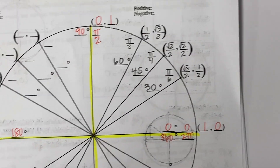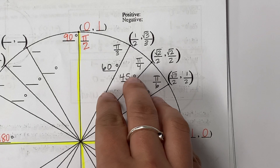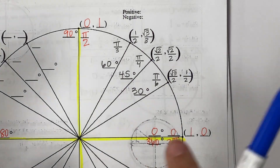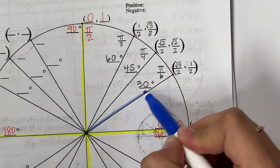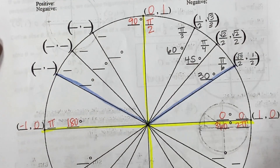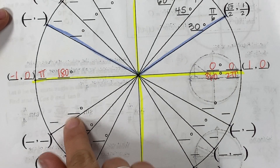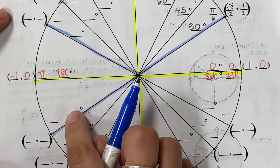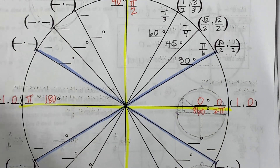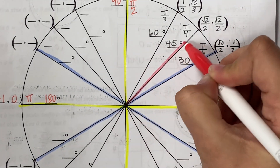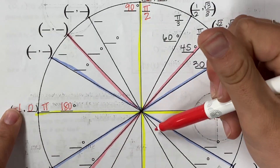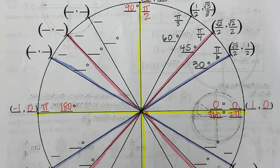Now, every quadrant from here uses a reference angle from quadrant 1. Remember, the reference angle is how far away the angle is from the x-axis. So if I'm looking at 30 degrees in quadrant 2, that line is 30 degrees from the x-axis. In quadrant 3, that line is 30 degrees from the x-axis. In quadrant 4, that line is also 30 degrees from the x-axis. Same thing with 45 and 60 — each has a matching reference angle in every quadrant.